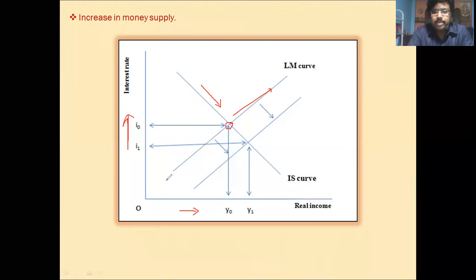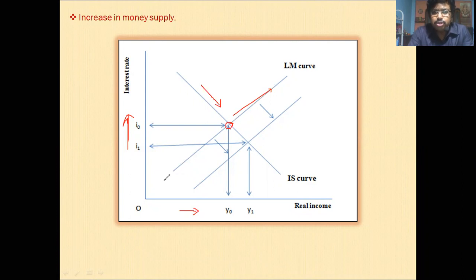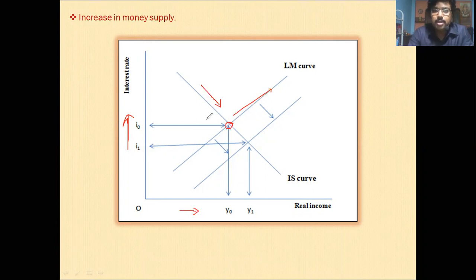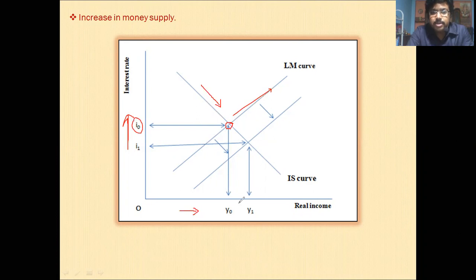The LM curve is nothing but the locus of all combinations of real income and interest rate that makes the money market in equilibrium. And the IS curve is nothing but the locus of all those combinations of real income and interest rate that makes the goods market in equilibrium. So the equilibrium rate of interest is I₀ and the equilibrium income is Y₀.